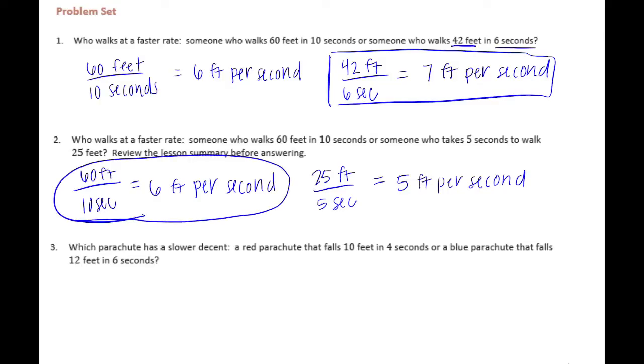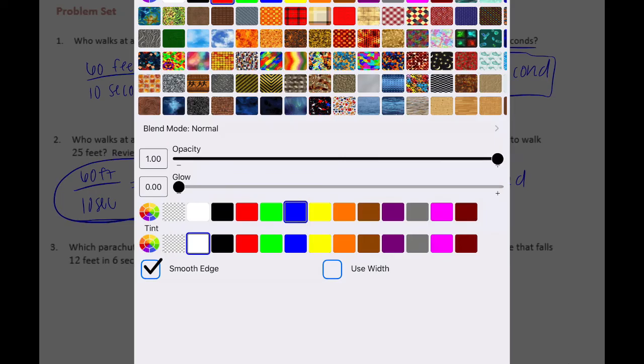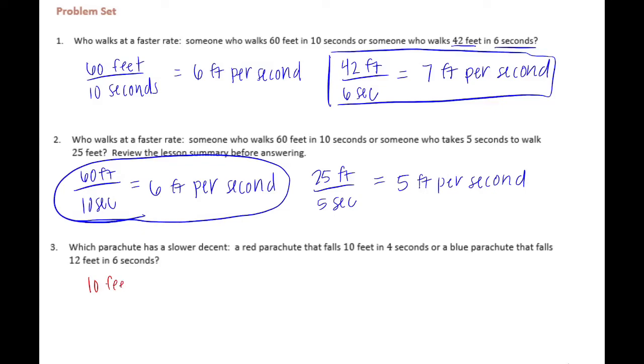Number 3: Which parachute has a slower descent, a red parachute that falls 10 feet in 4 seconds or a blue parachute that falls 12 feet in 6 seconds? Let's start with the red one. 10 feet in 4 seconds would be 10 fourths, or if we make that a mixed number, 4 goes into 10 two times with 2 left over, so 2 and a half feet per second for the red one. And then the blue one would be 12 feet in 6 seconds, 12 divided by 6 is 2 feet per second.